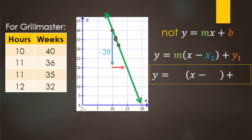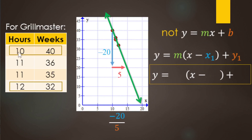You have to be careful because the y-scale and x-scale both go by fives here, not ones. Rise over run is negative 20 over 5. Alternatively, use the table: from 40 to 32 weeks is down 8, and from 10 to 12 hours is over 2, giving negative 8 over 2. Both reduce to negative 4, so the slope is −4.